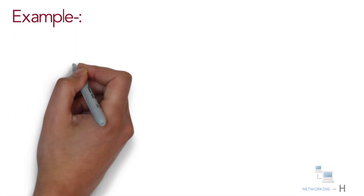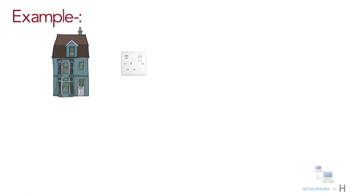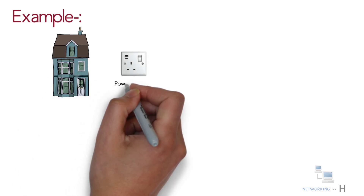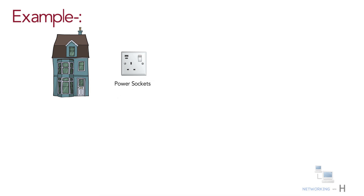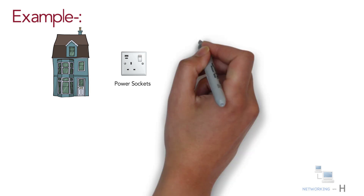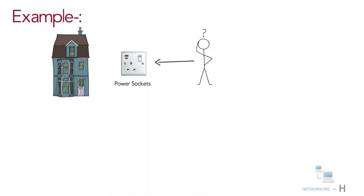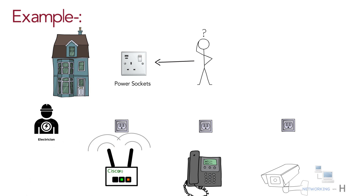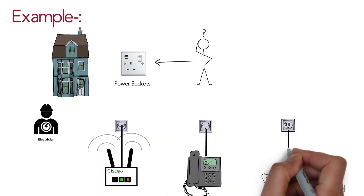Let's try to understand this with an example. When you walk around any building you see electrical power outlets everywhere. When finishing the interior of a building, electricians run electrical cables and install electrical outlets to any location that might need power, such as for a fridge, TV, PC, etc. As a network engineer, you might have thought that the electrician might have provided enough power to the wiring closets to power on the networking devices.